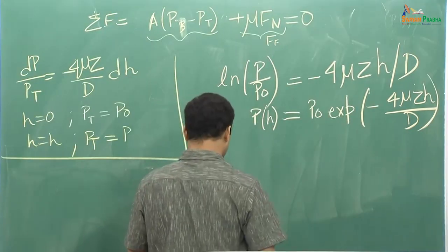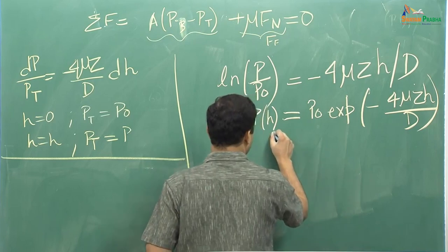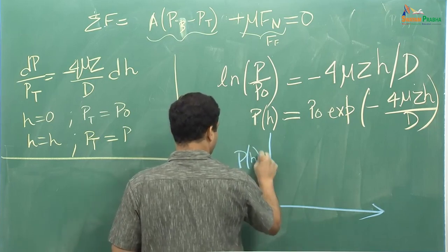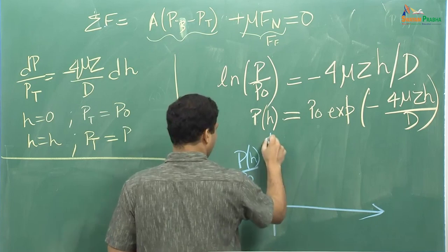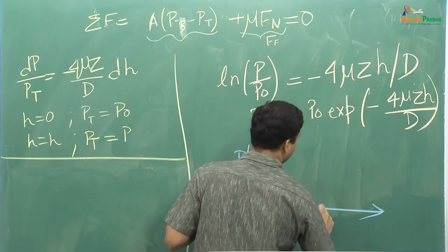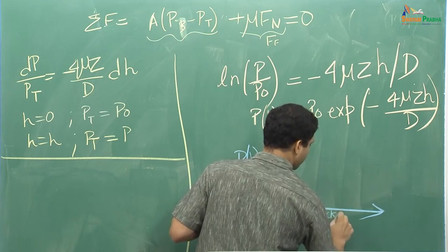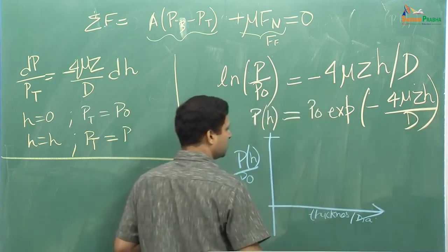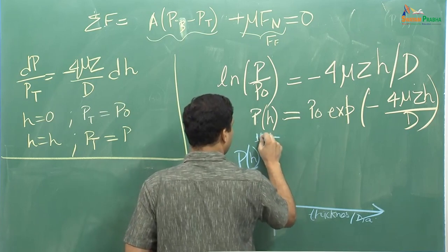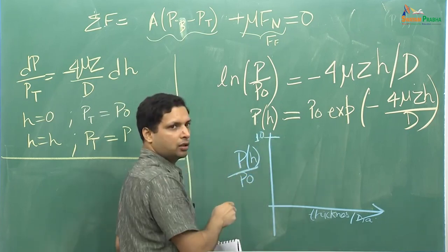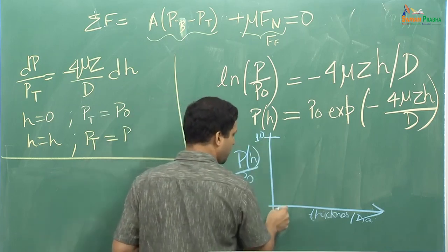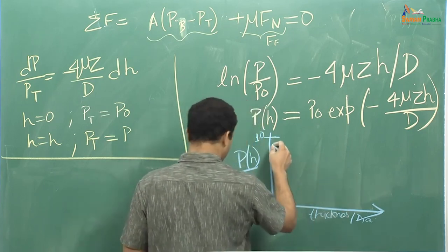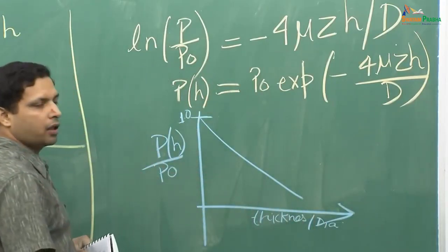Let me show you how the pressure variation looks like. This is P(H) by P naught on the y-axis, and on the x-axis we have thickness by diameter, which is H by D. Here you have 1.0, meaning P(H) is equal to P naught — that is the maximum pressure being applied, which you see just at the surface.